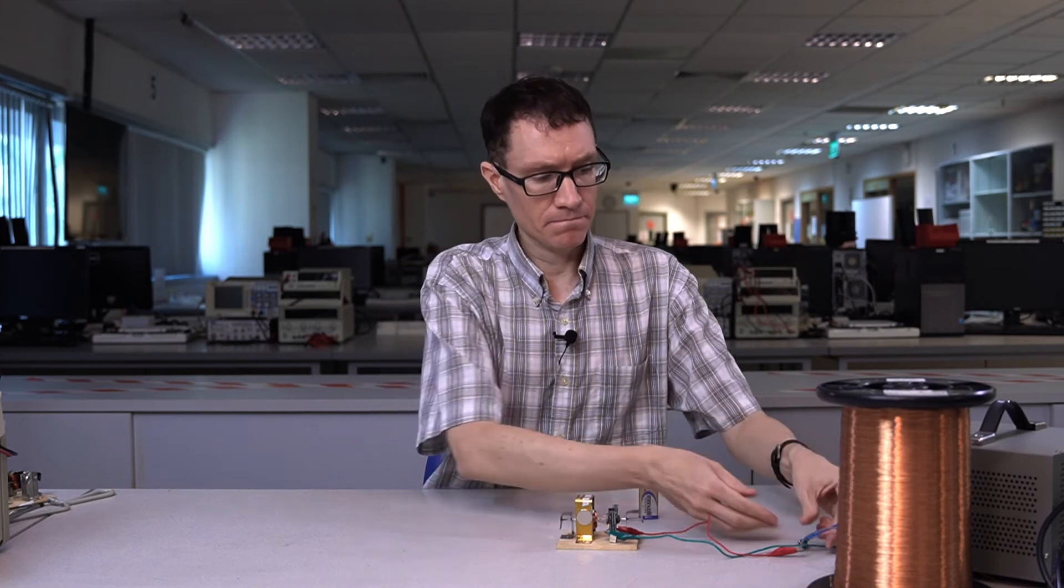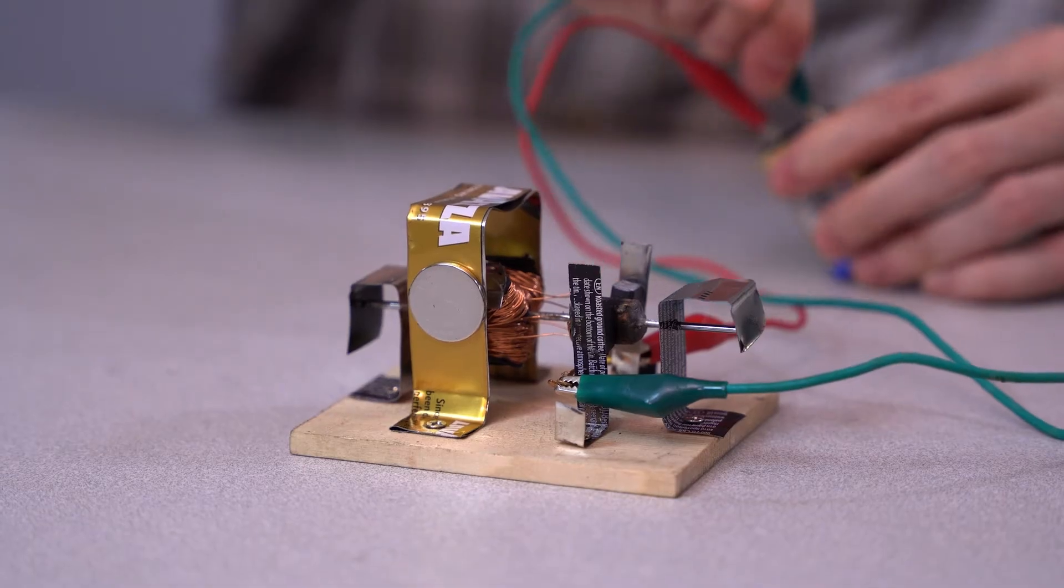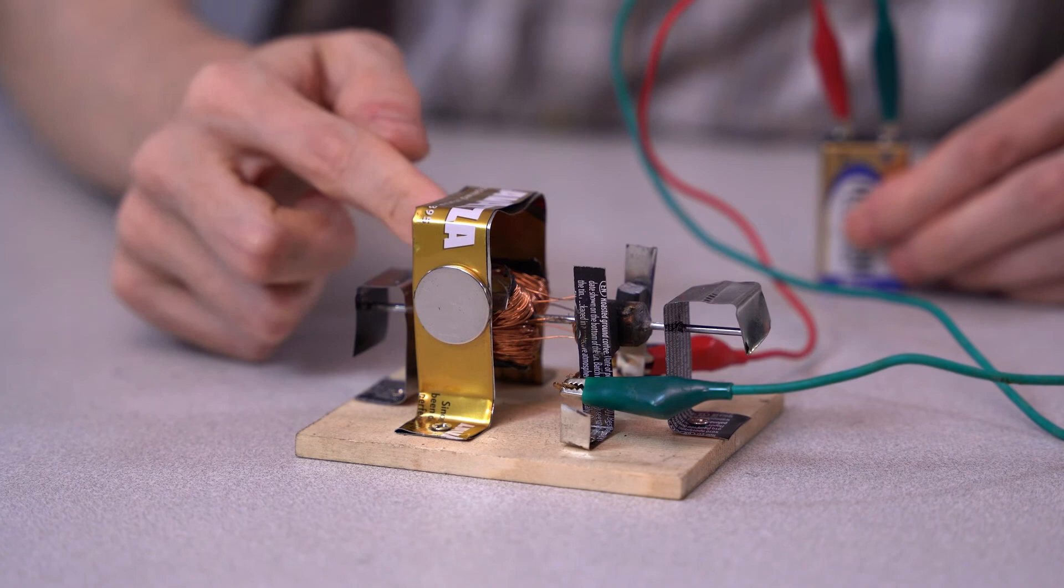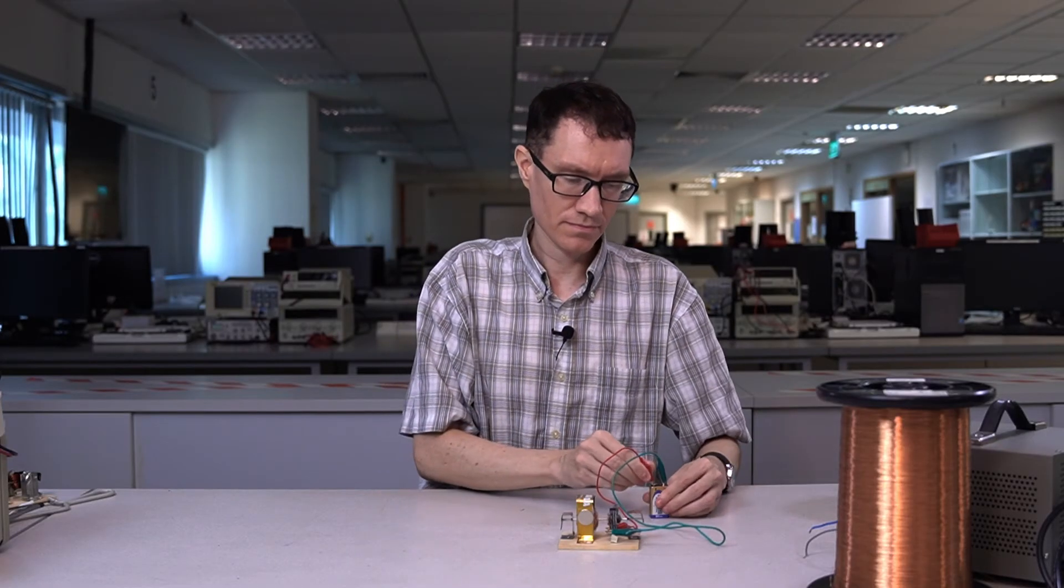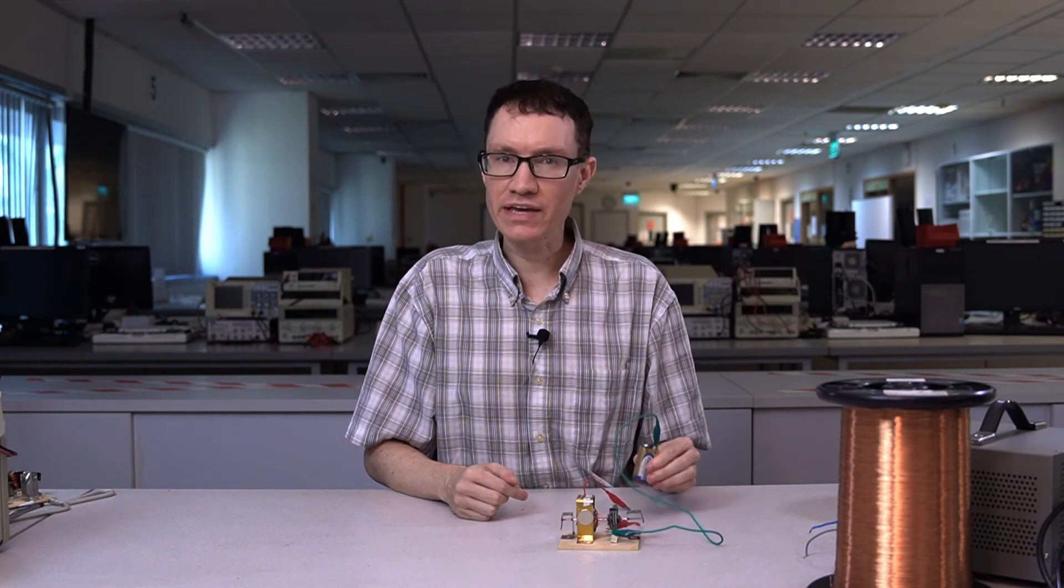Let's try the motor with just a 9-volt battery. Look, it doesn't start spinning unless I give it a head start. Why did it work with the DC power supply and not the battery? Well, it's because the motor needs extra torque to get started and more torque requires more current at a given voltage. This battery can't quite give us the current that we need.